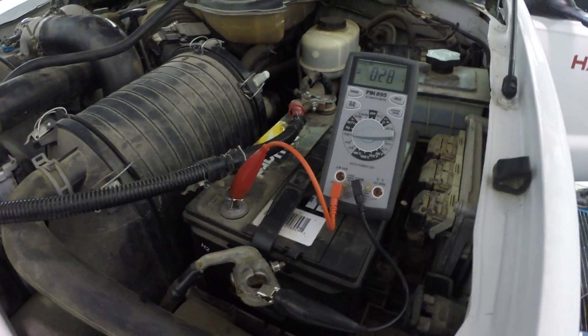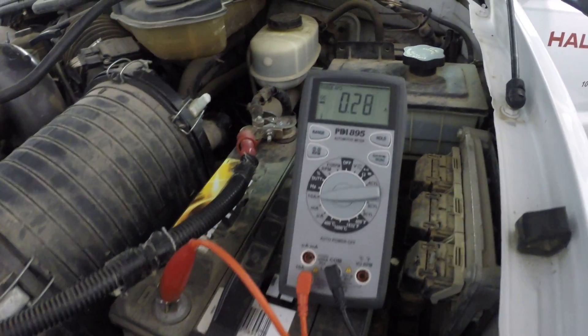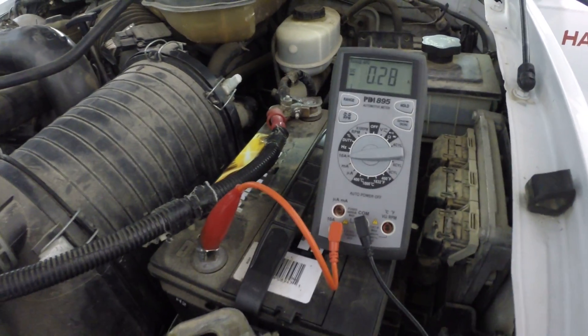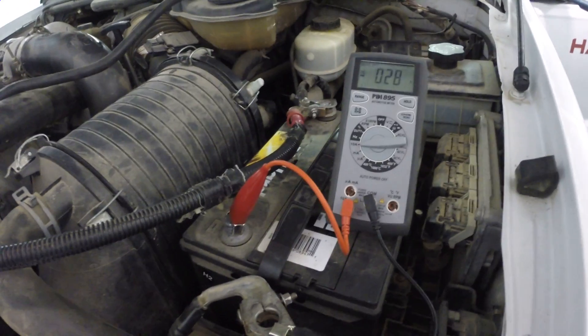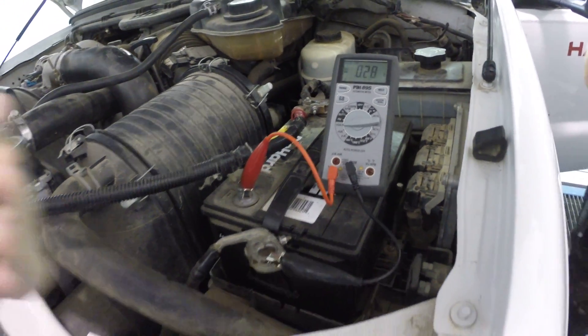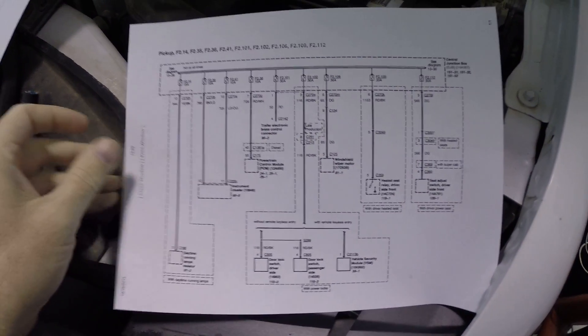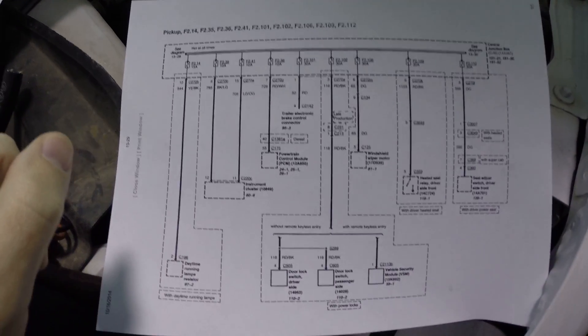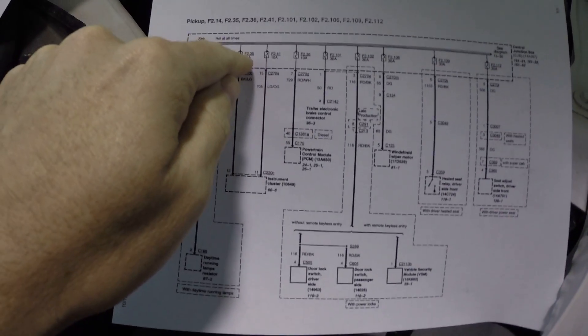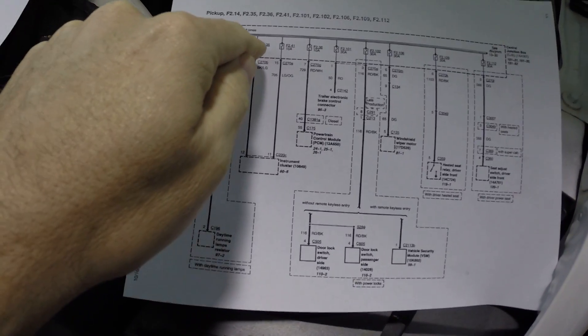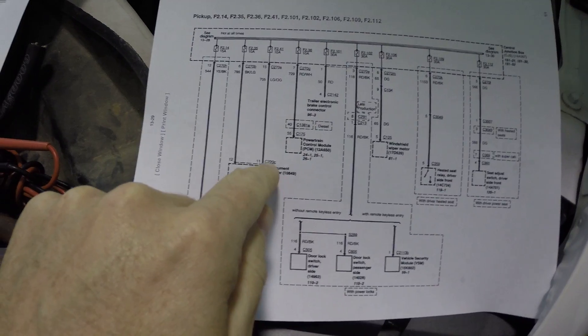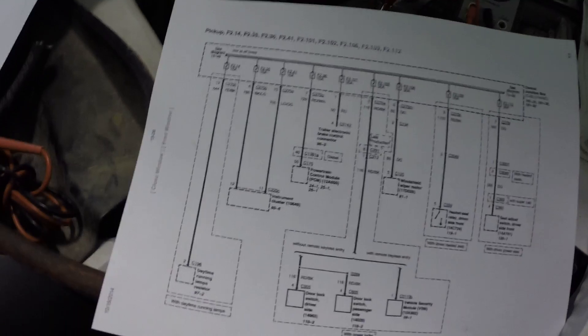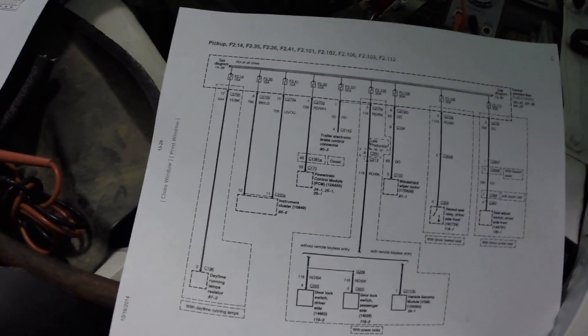When you pull the fuse and the ammeter reading drops to zero or very close to zero, you then get a power distribution diagram. On this diagram, you can see the fuses along the top — fuse 2.35 is right here. This was straightforward because fuse 2.35 only goes to the instrument cluster, which made this diagnosis simpler.